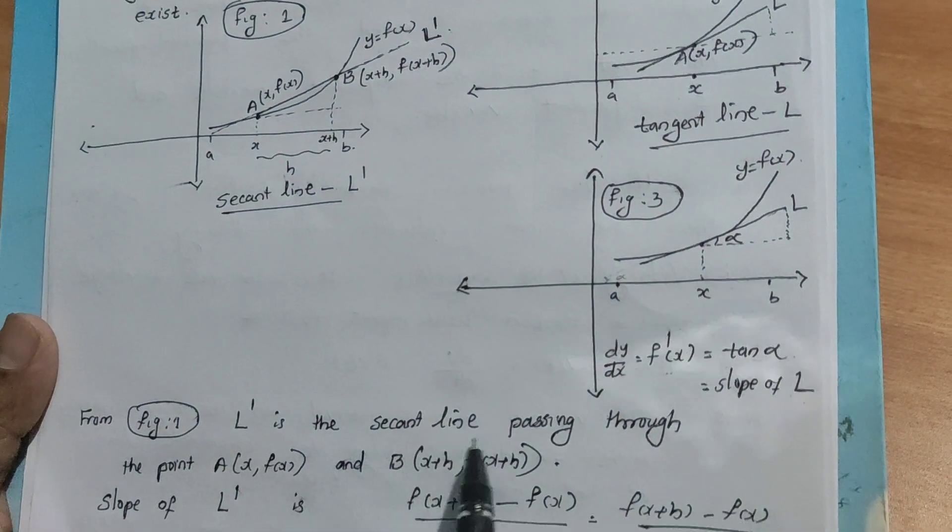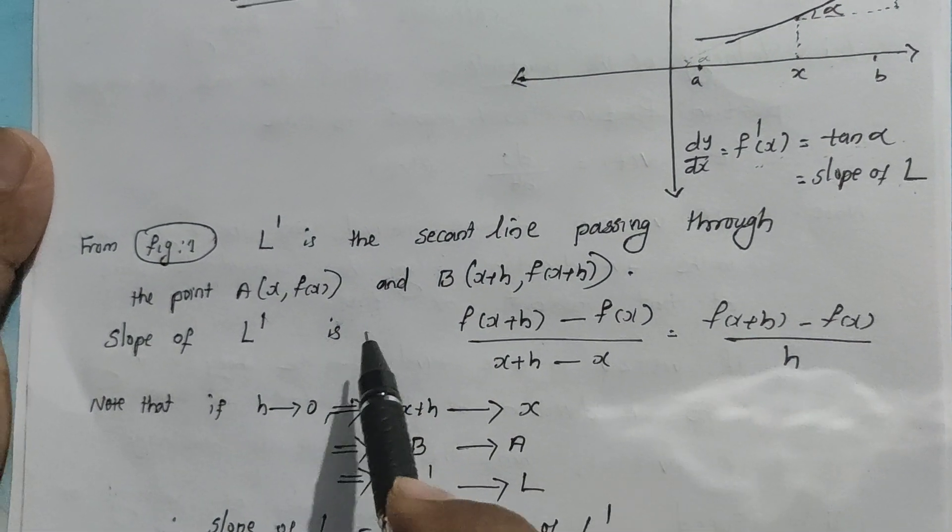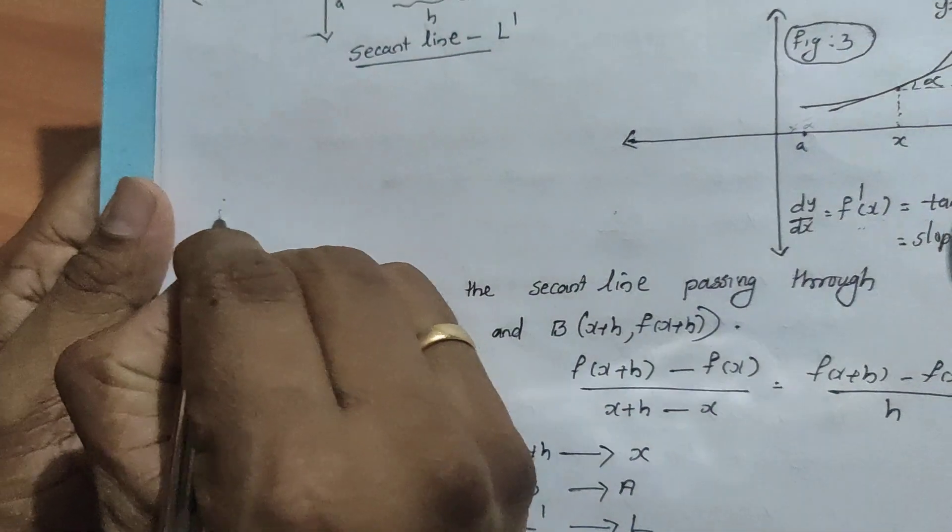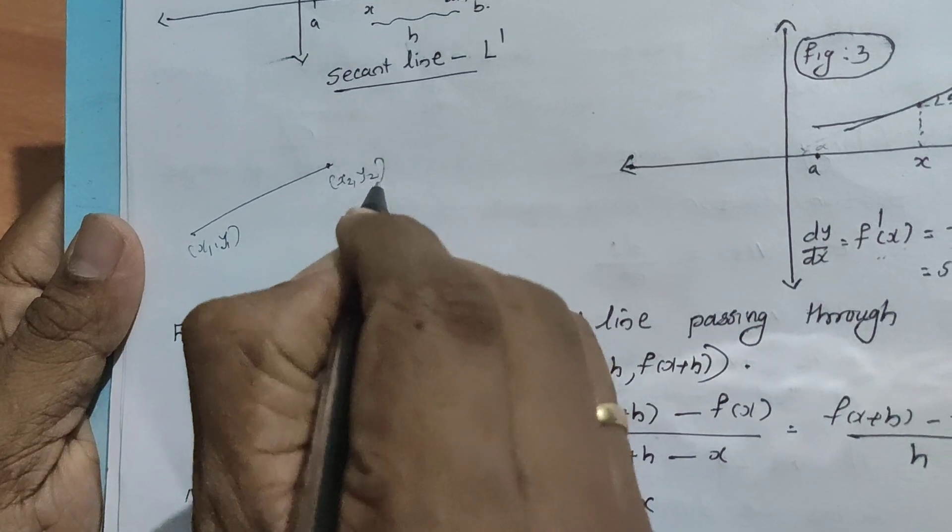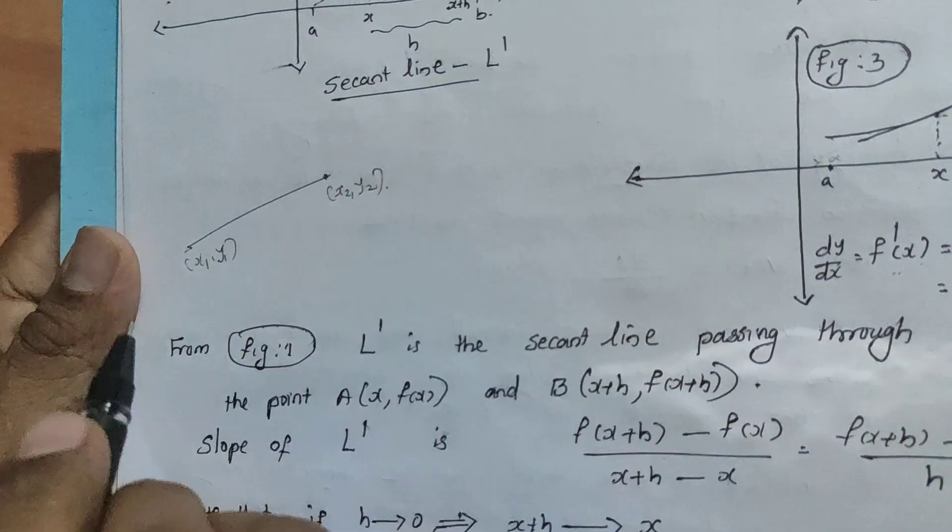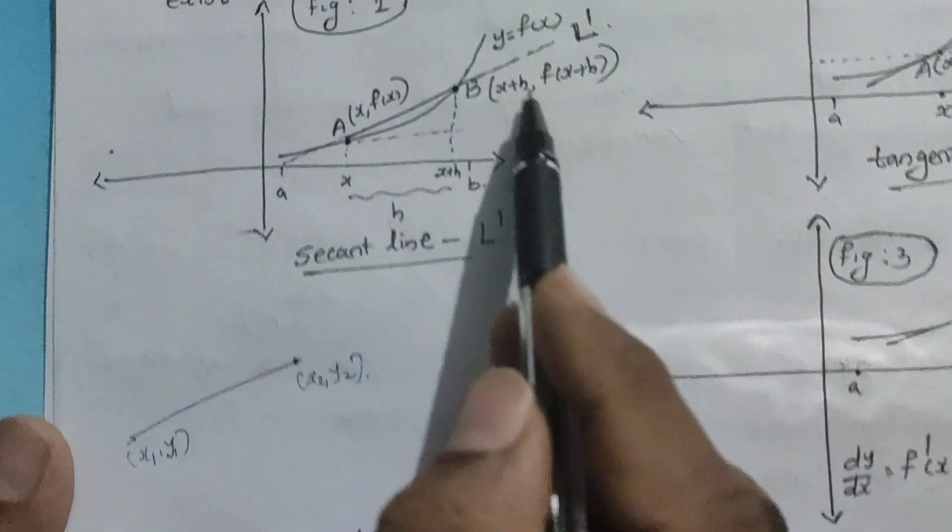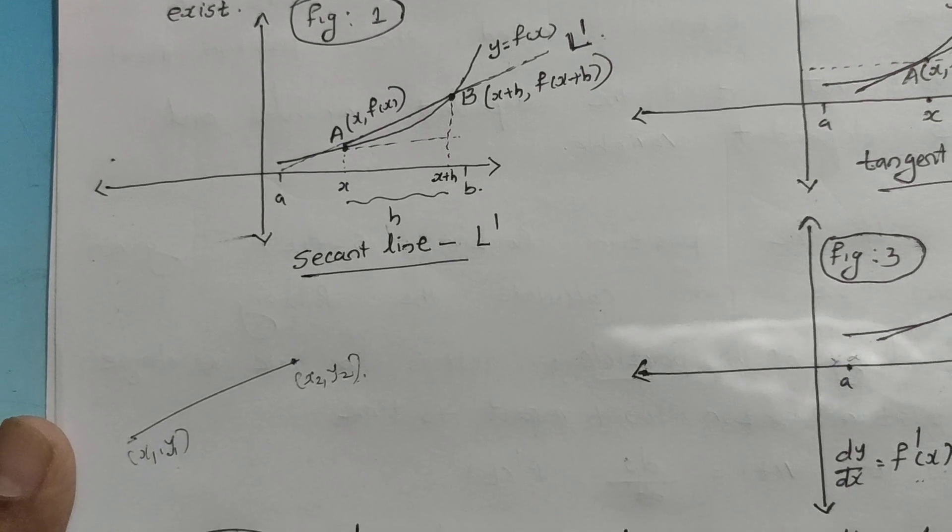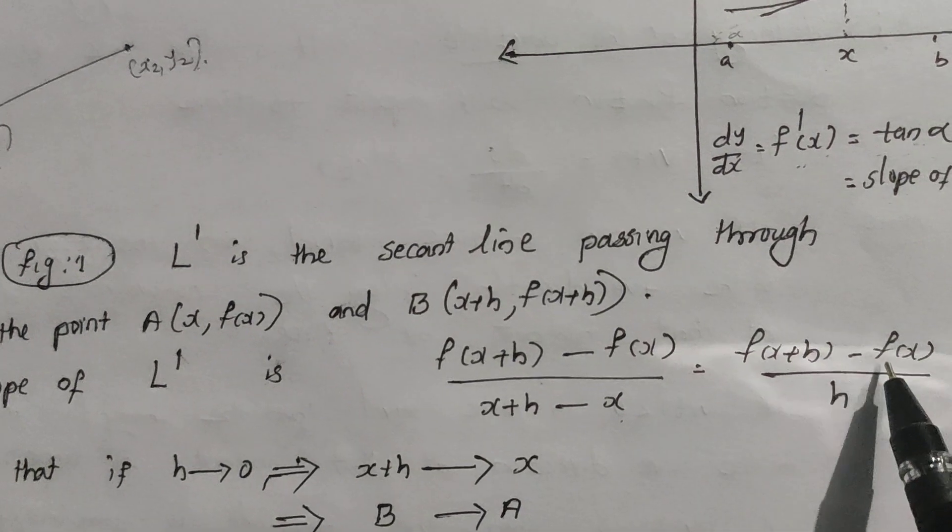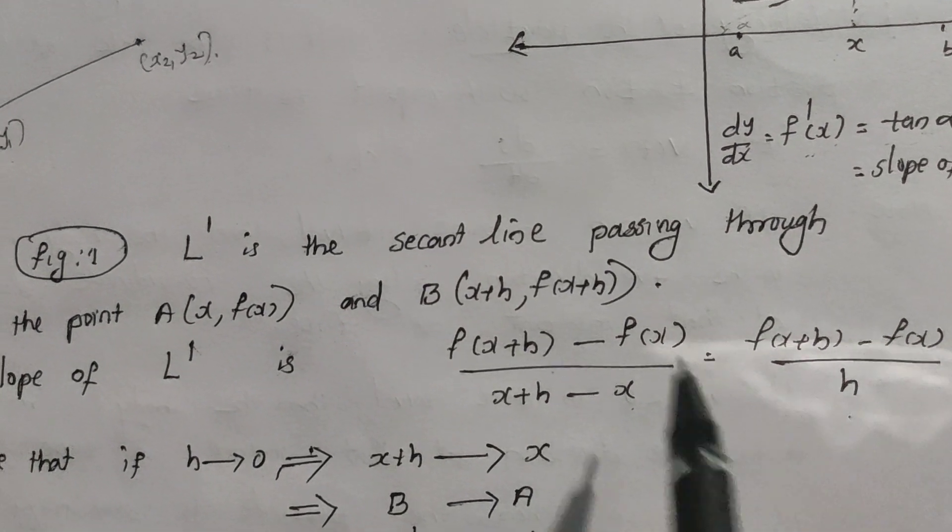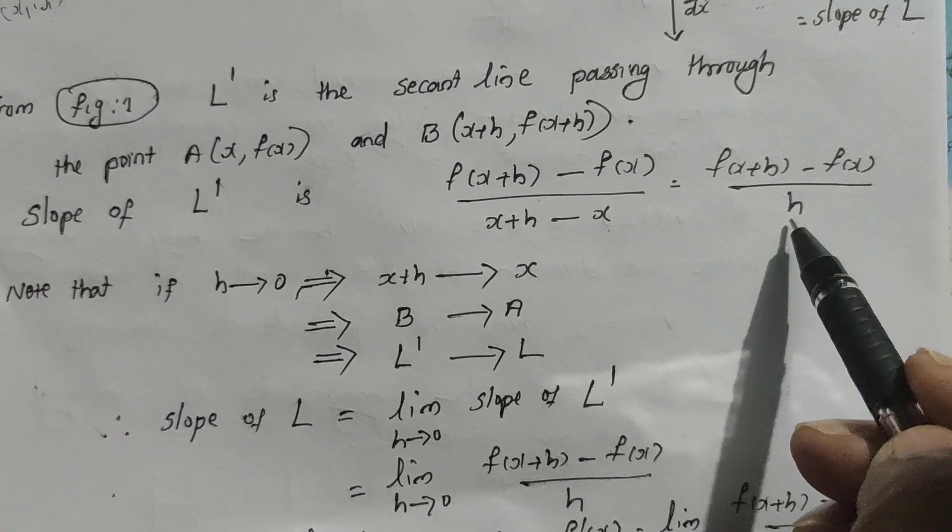Look at Figure 1. L' is the secant line passing through points A and B. The slope of L' is: with ordered pairs (x₁, y₁) and (x₂, y₂), the slope is (y₂ - y₁)/(x₂ - x₁). So the slope is [f(x+h) - f(x)]/(x+h - x) = [f(x+h) - f(x)]/h. That means the slope of our secant line joining A and B is [f(x+h) - f(x)]/h.